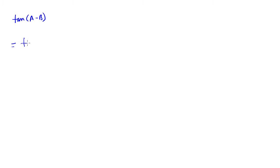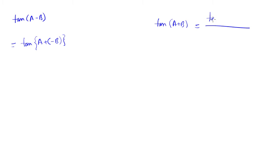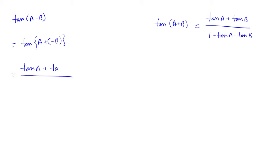We have seen tan of a minus b. We have already seen tan of a plus b equals to tan a plus tan b divided by 1 minus tan a into tan b.